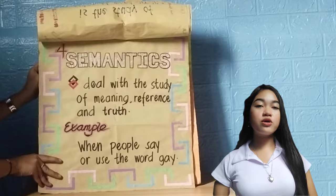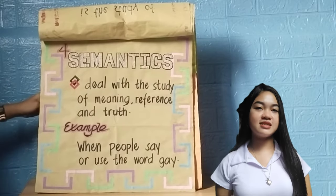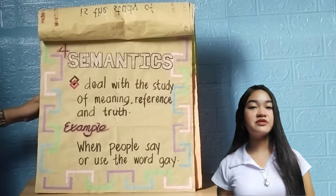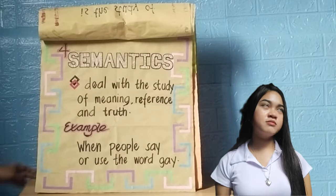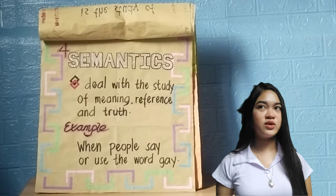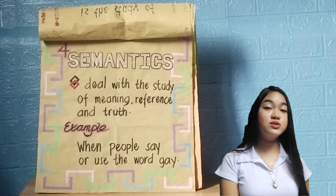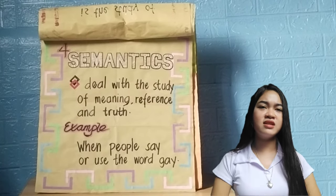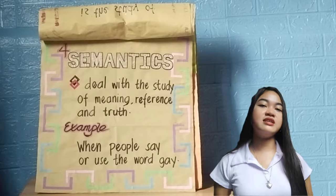The fourth structural branch is semantics. Semantics deals with the study of meaning, reference, and truth. Semantics is the study of meaning. For example, when people use the word 'gay,' there are many related ideas and meanings associated with it.